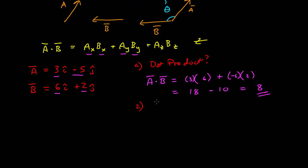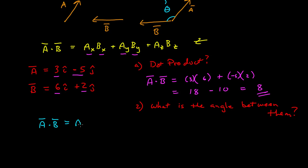Now, what if I want to find the angle between them? I think I would want to use the other form of the dot product: a dot b is equal to the magnitude of a times the magnitude of b times cosine theta, where theta is the angle between the two vectors. I already know the dot product — I've calculated that, it's 8.